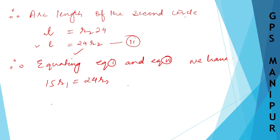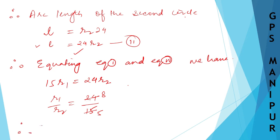Equating the two equations: 15·r1 equals 24·r2. So r1 divided by r2 — bring r2 to this side and transfer 15 to the other side — it will be 24 divided by 15. Cancelling by 3: 3 fives are 15 and 3 eights are 24, so it is 8 by 5. Therefore the required ratio is 8 divided by 5, which is 8 is to 5.